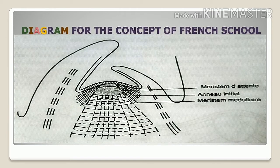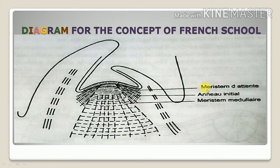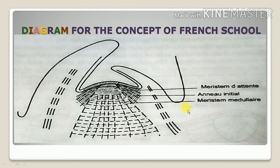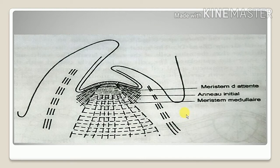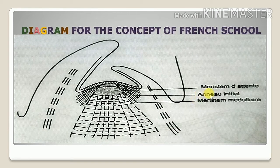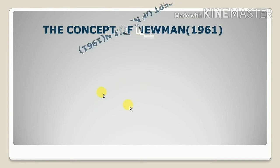The three areas are shown in the diagram and designated in French as méristème d'attente, and meristème médullaire, but translated as: first, peripheral active zone; second, waiting meristem; and third, pith meristem — so outer, middle, and inner. These were the three areas according to the concept of the French school.